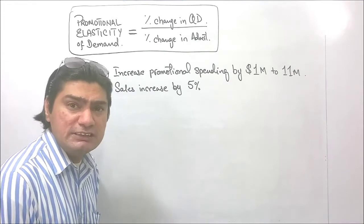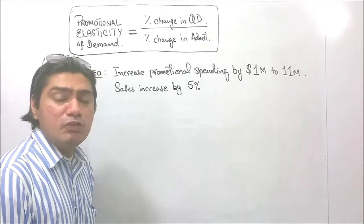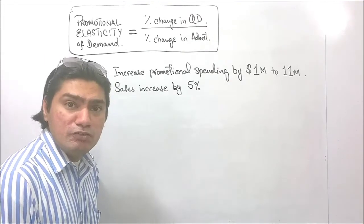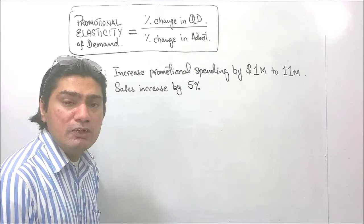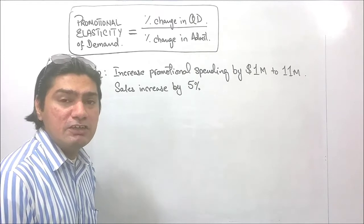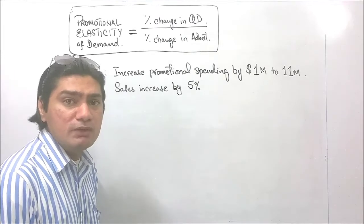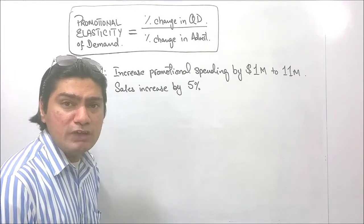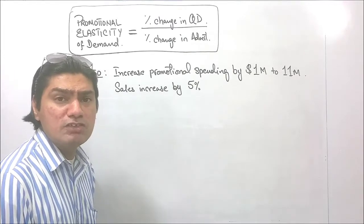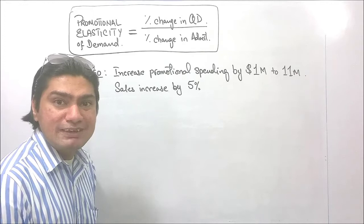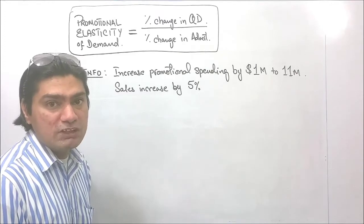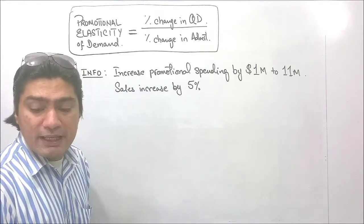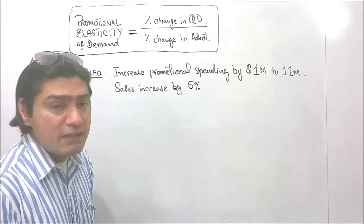For any other elasticity of demand, this is percentage change in quantity demanded and percentage change in advertising. Percentage change basically means the rate of change when one value is changing to another — there is an old value and there is a new value. So what is the rate of change between both these values?